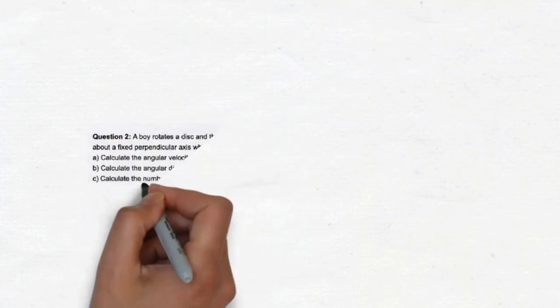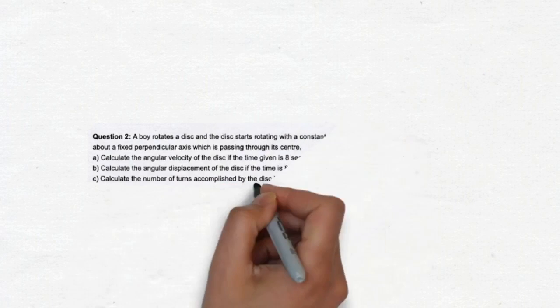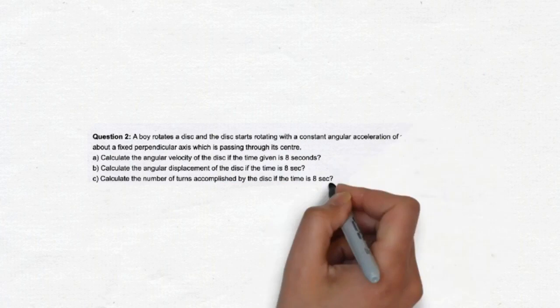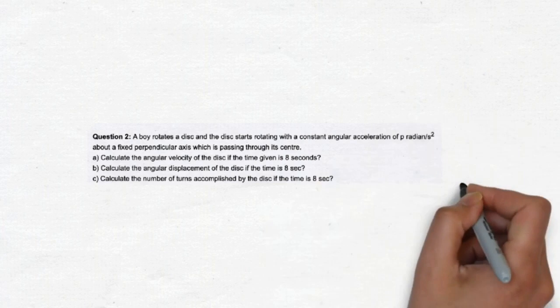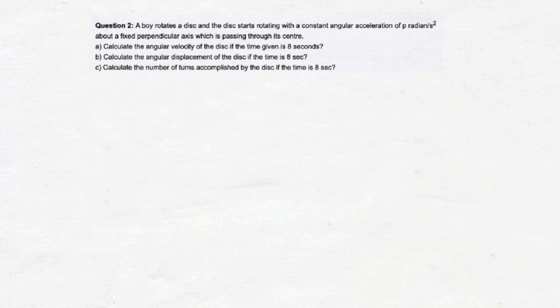Question 2. A boy rotates a disk and the disk starts rotating with a constant angular acceleration of π radian per s squared about a fixed perpendicular axis which is passing through its center. A. Calculate the angular velocity of the disk if the time given is 8 seconds. B. Calculate the angular displacement of the disk if the time is 8 seconds. C. Calculate the number of turns accomplished by the disk if the time is 8 seconds. Now, let's see the solution.